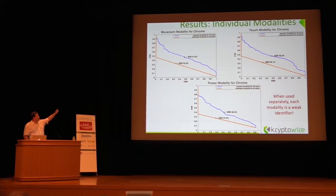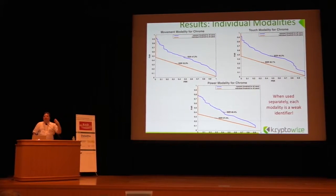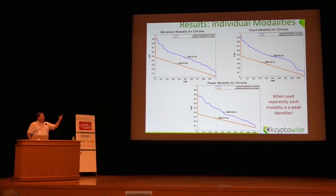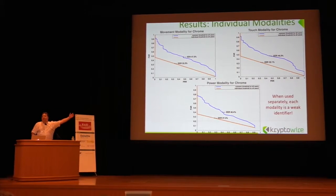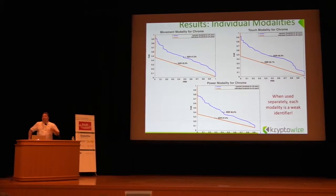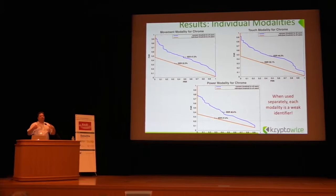If you look at individual modalities without combining them, you can get bad results, because different users are unique at different modalities. We cannot create a unique representation using only touches, because touches alone do not contain enough information to convey the uniqueness of the user. When used separately, each modality is a weak identifier. You have to pull together the individual weak identifiers. The average person on any single modality overlaps in demand, but if you combine all three modalities and weigh them appropriately, you get a unique profile.